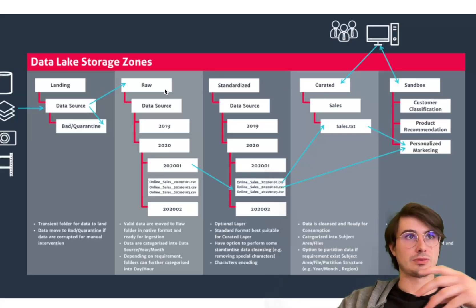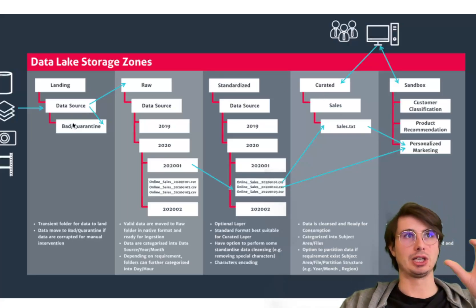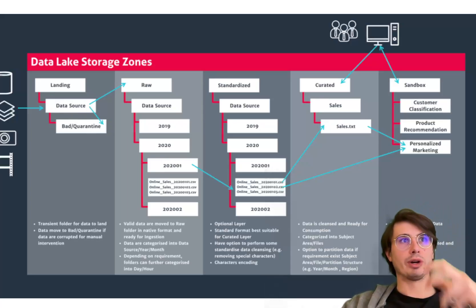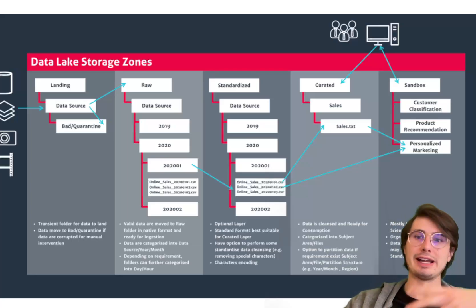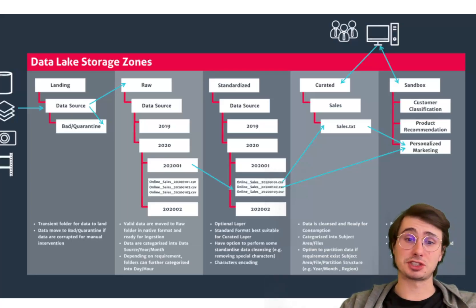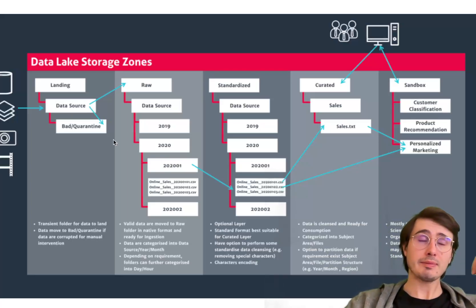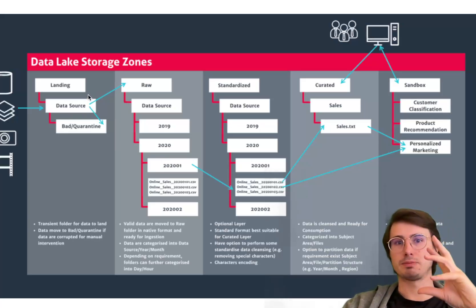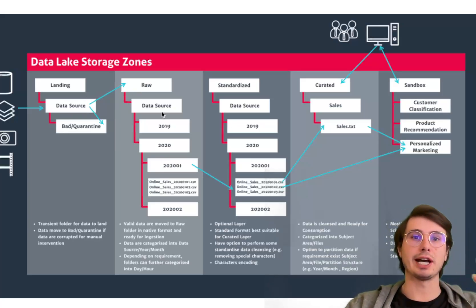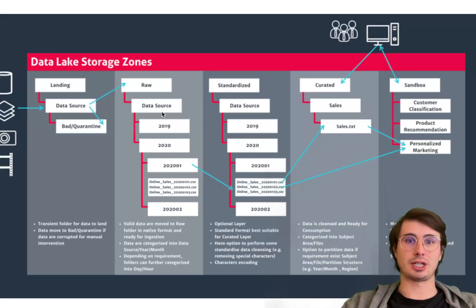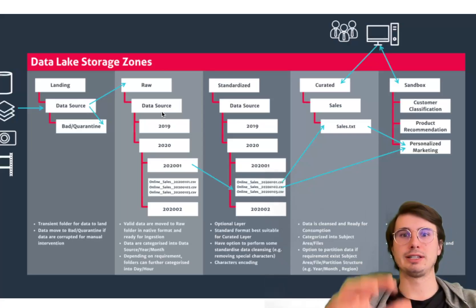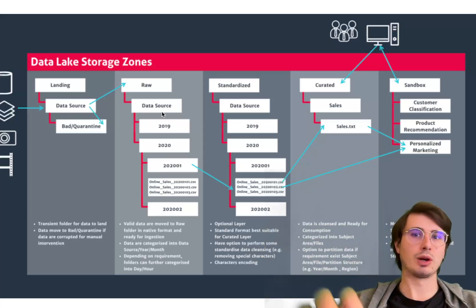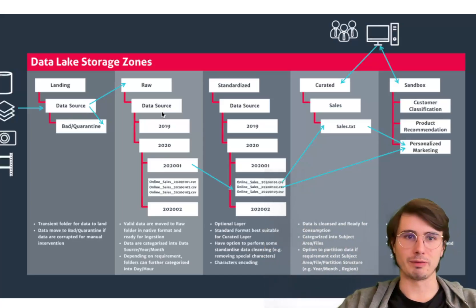Where it starts is in a landing or raw zone. First you have a landing zone where you quarantine and remove any potential bad data to avoid even storing raw bad data. Then, once you've purged any bad data that you don't actually want to ingest, your raw zone will serve as the primary landing area for data ingesting in the data lake where you're going to store all of your data in its original raw, unaltered format.